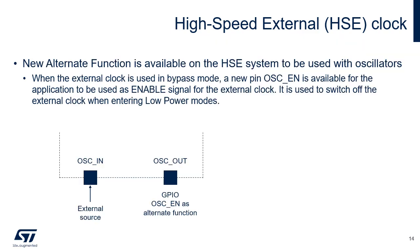In external source mode, also called HSE bypass mode, an external clock source must be provided. It can have a frequency of up to 48 MHz. The external clock signal — square, sinus, or triangle — must drive the OSC in pin. The OSC out pin can be used as GPIO or it can be configured as an OSCEN alternate function to provide a signal enabling the stop of the external clock synthesizer when the device enters low power modes.